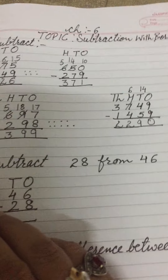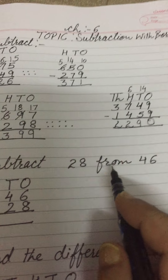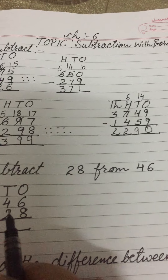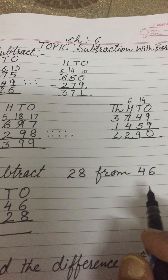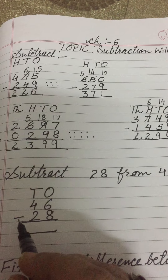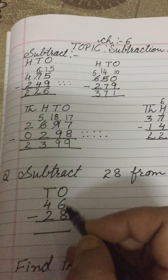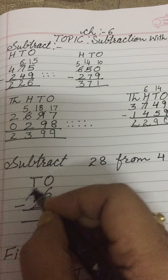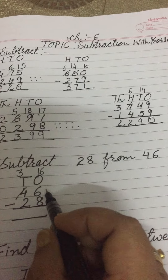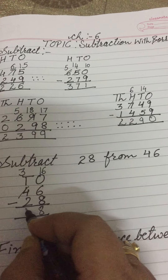Now, if subtraction is given in word form: subtract 28 from 46. We have to see which number is bigger. First, we will write the bigger number. Which is bigger — 28 or 46? 46 is bigger than 28. So we write 46 on top and 28 below. Start from the 1's place. 6 is smaller than 8, so we borrow from the 10's. 4 minus 1 is 3, and here it becomes 16. 16 minus 8 is 8. 3 minus 2 is 1.